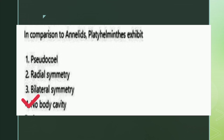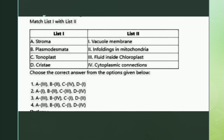The next is a match the following. List one: stroma, plasmodesmata, tonoplast, cristae. List two: vacuole membrane, infoldings in mitochondria, fluid inside chloroplast, cytoplasmic connection. The right answer is option three: stroma - fluid inside chloroplast, plasmodesmata - cytoplasmic connection, tonoplast - vacuole membrane, and cristae - infoldings in mitochondria.